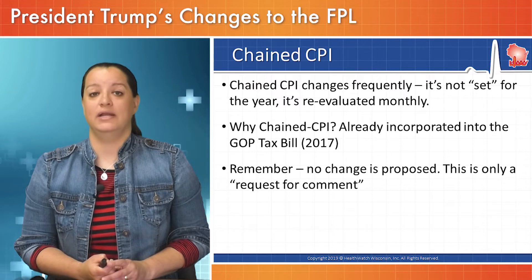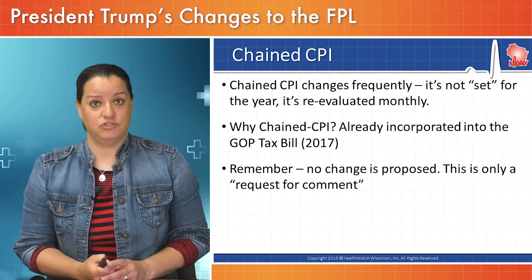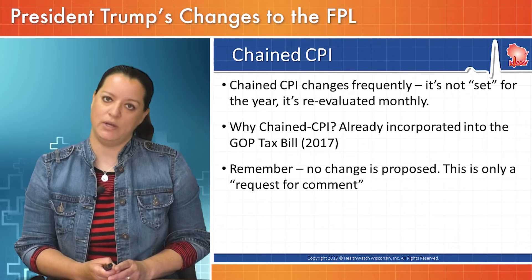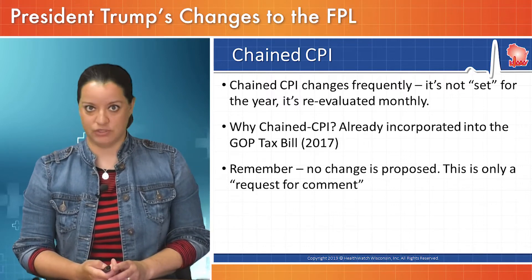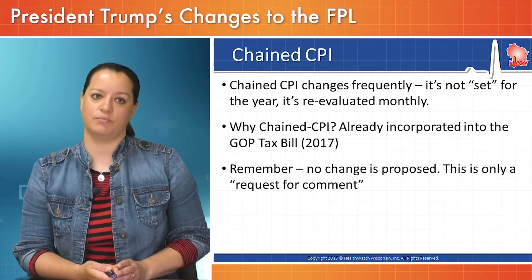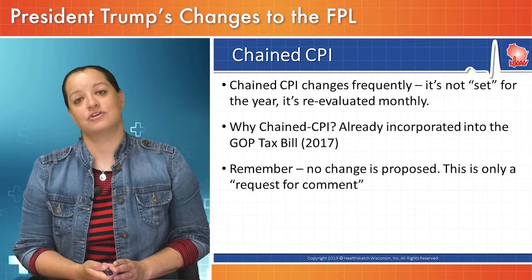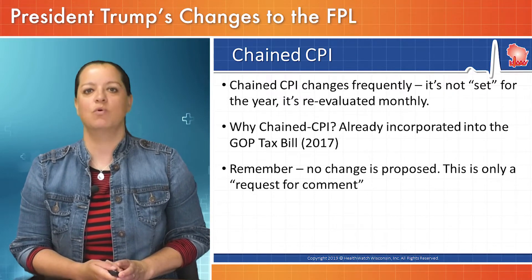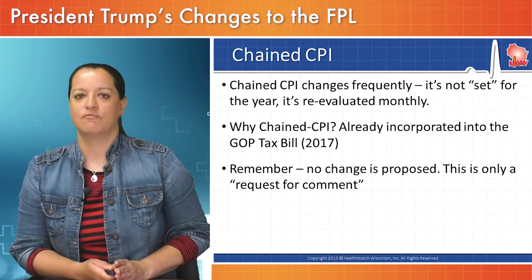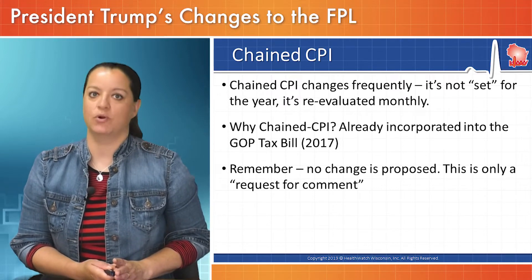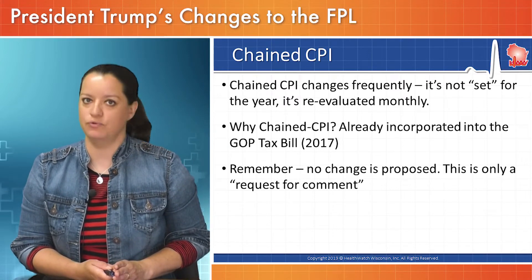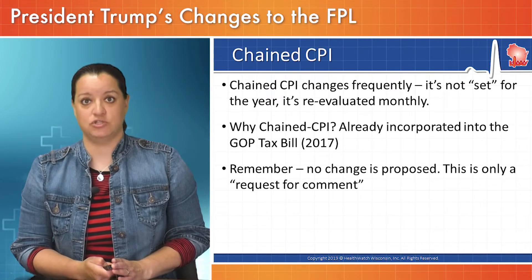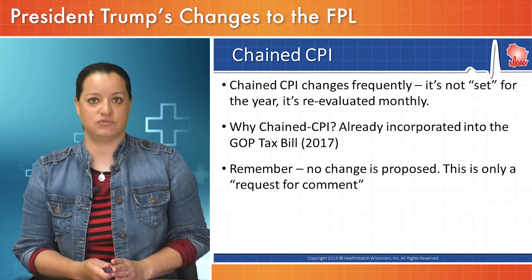Why might the administration lean toward the Chained Consumer Price Index? Well, it's already incorporated in the GOP tax bill signed into law in 2017, so it's already on the books in one area — they might point to administrative efficiency. But others are saying it's because it would most readily knock more people out of eligibility for public benefits programs across the board — Medicaid, food support, and housing support. Remember, no change is proposed; this is only a request for comment.